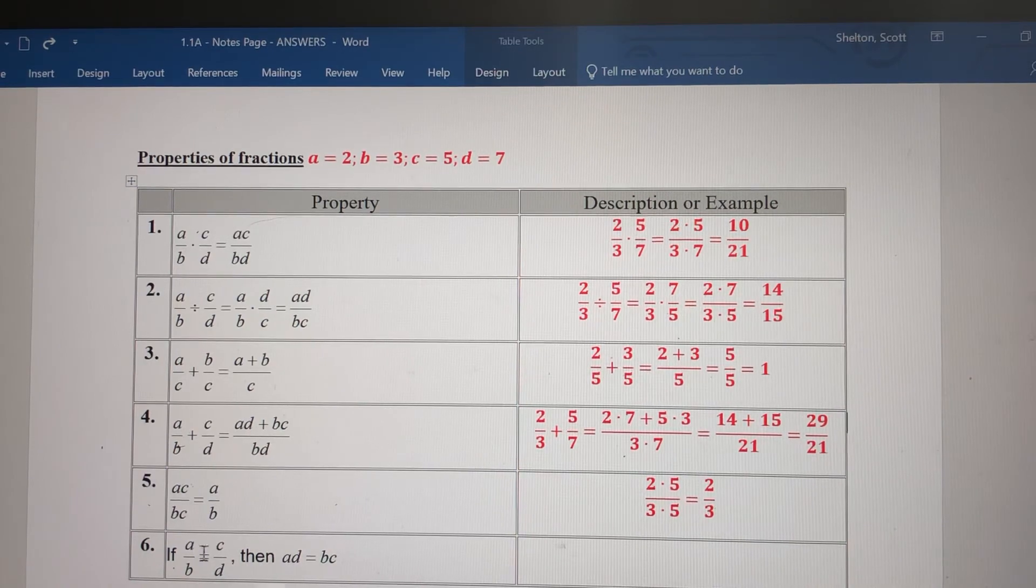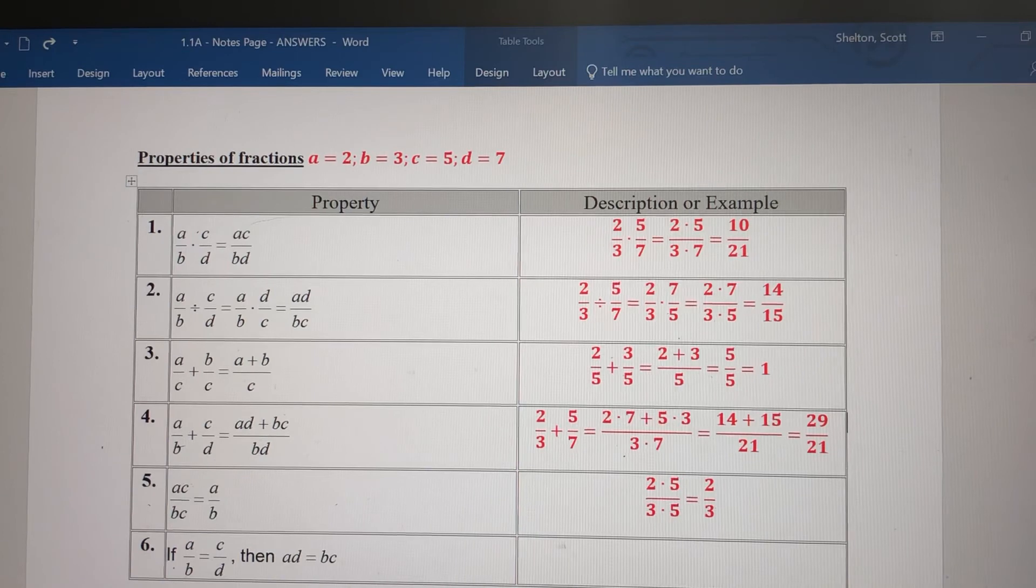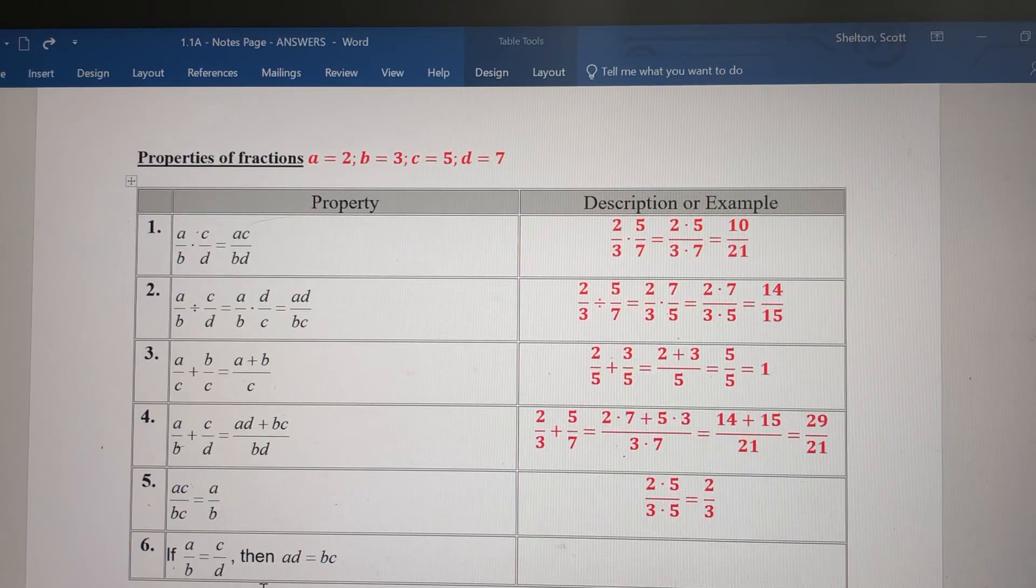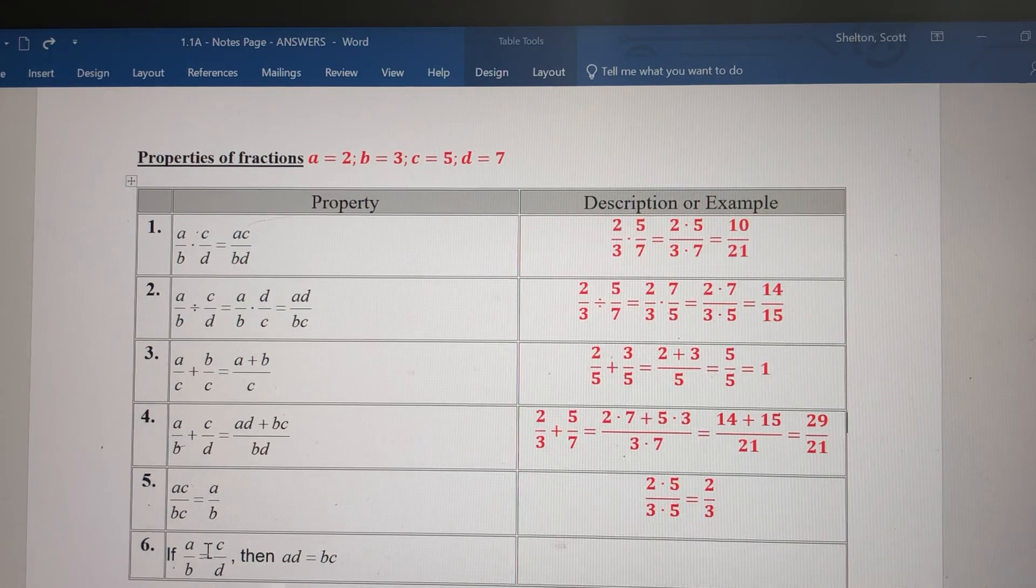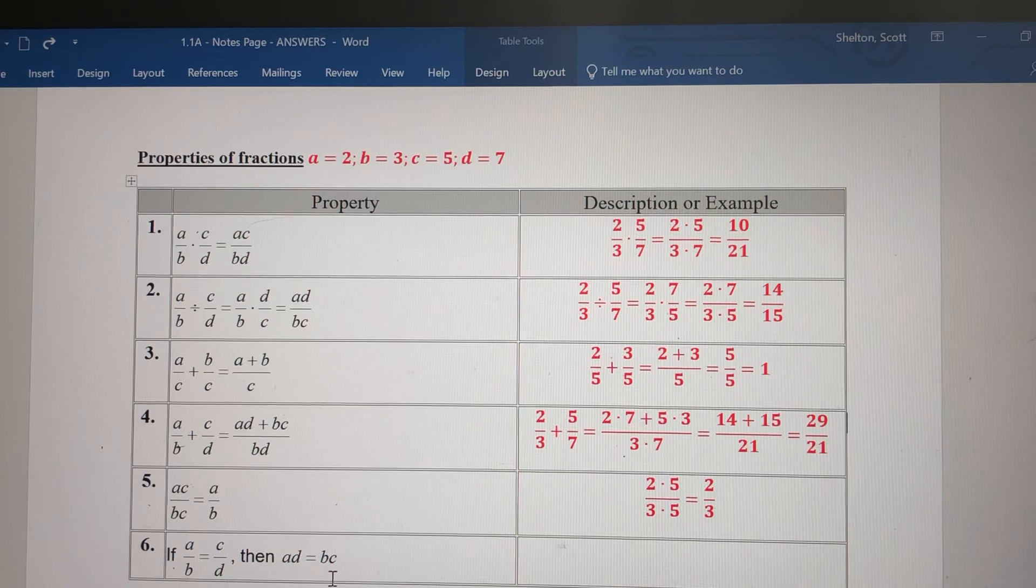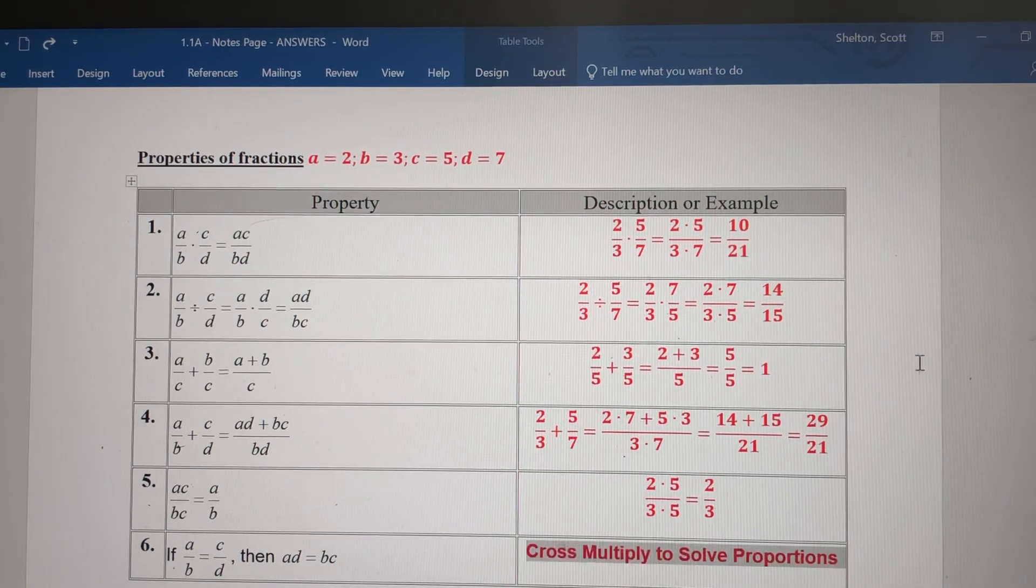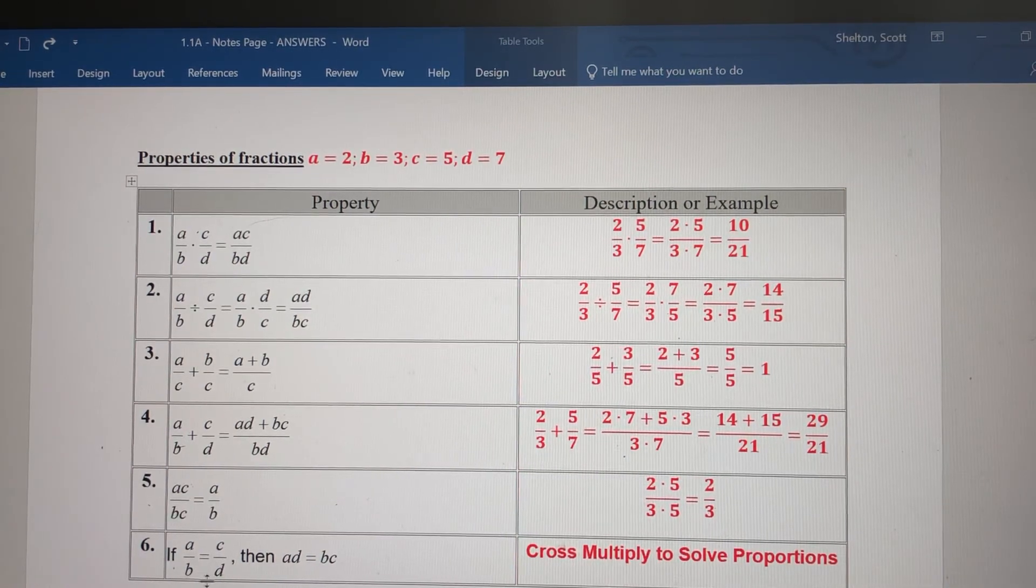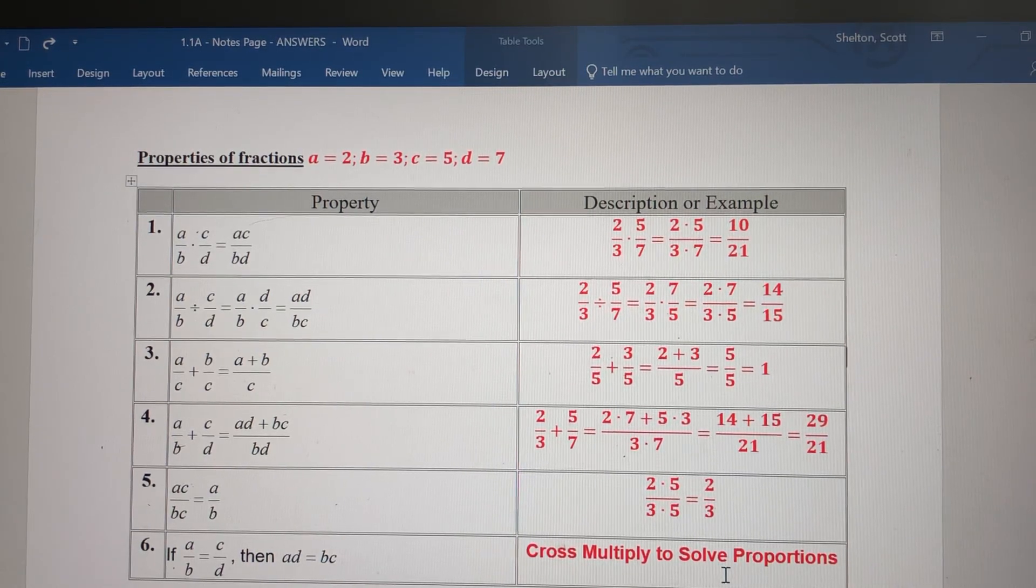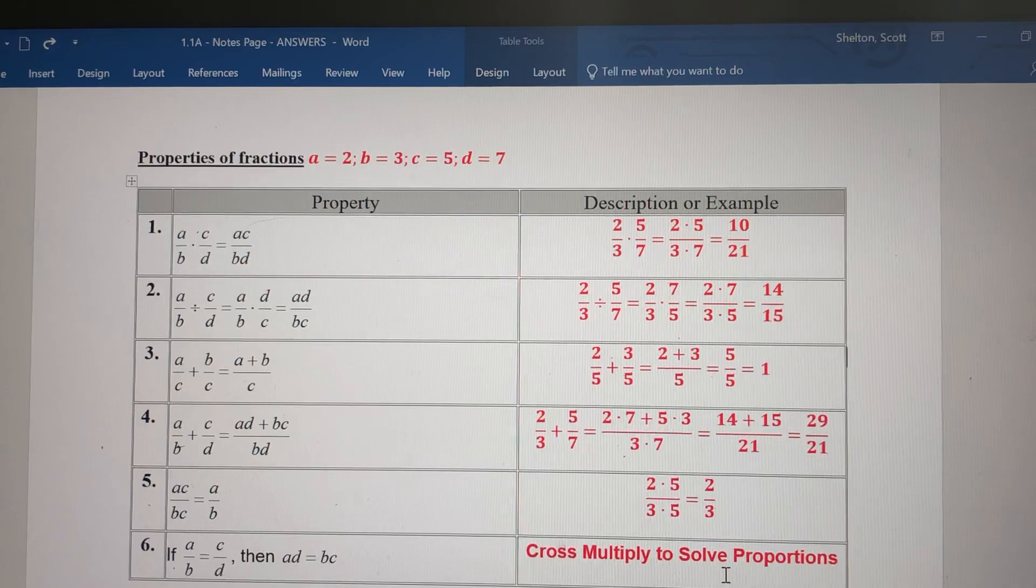Property 6: if you've got two fractions equal to each other, we call this ratio and proportion. I've got A and D - multiply A times D, and multiply B times C. I can't use our values because 2/3 is not equal to 5/7. If you have two ratios or fractions equal to each other, cross-multiply and solve from there. That's the properties of fractions.